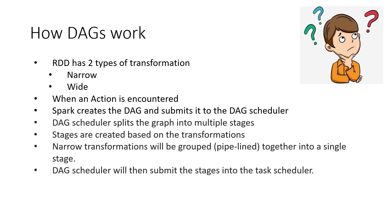Whenever there are narrow transformations, they form a single stage — multiple narrow operations can be pipelined or chained together. But if there is a wide transformation, it must be split into separate multiple stages. That's how a DAG works in Spark.